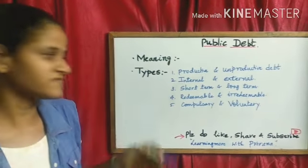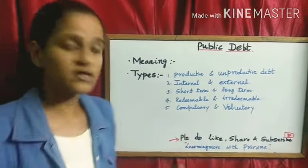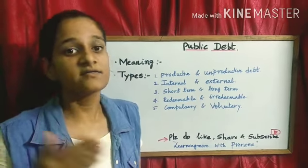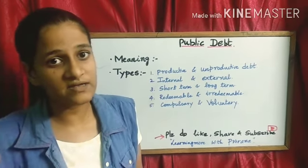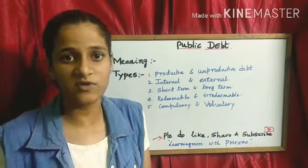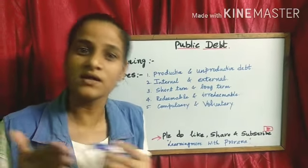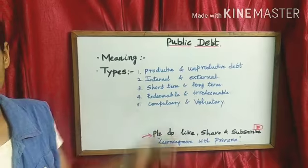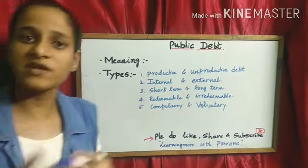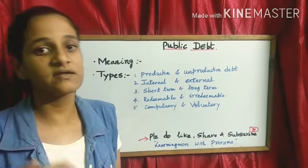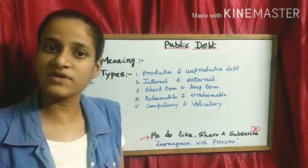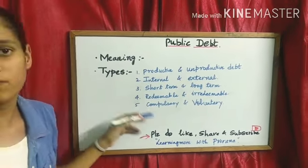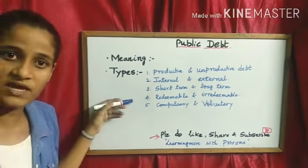When we come to redeemable debt, the government is going to borrow money and it will have a deadline — till that time, you have to repay the loan. But when we come to unredeemable debt, there will be no time limit. The government, whenever it is convenient, can pay the loan. But in both cases, we are going to pay interest.